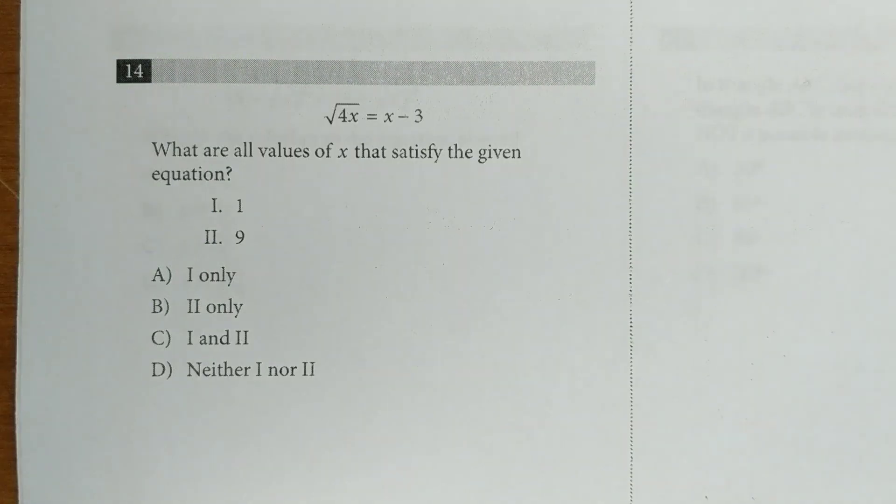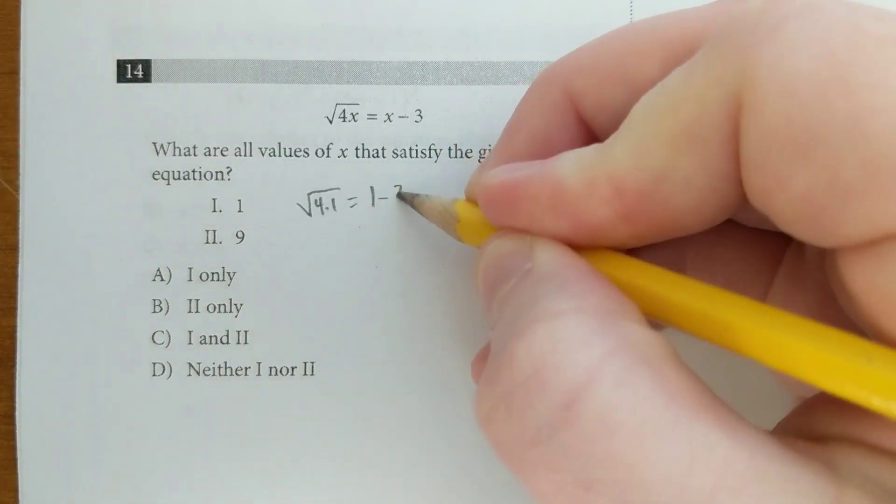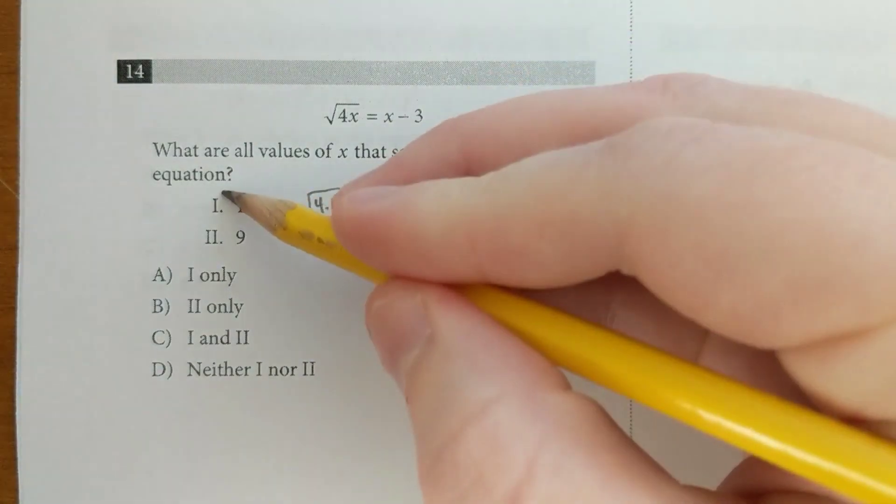Here we could square both sides, but let's just plug in the answers instead. Square root of 4 times 1, does that equal 1 minus 3? Nope. So that's out.